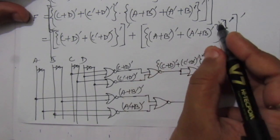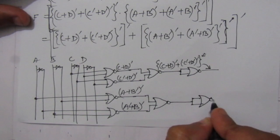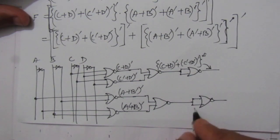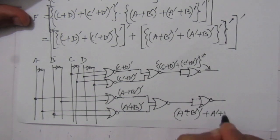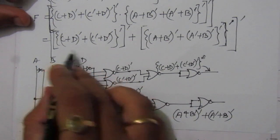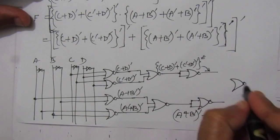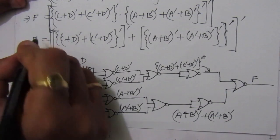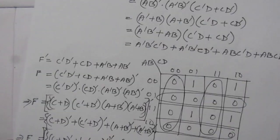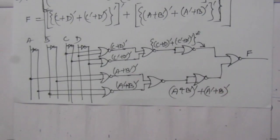After this, we have both sub-expressions. A final two-input NOR gate takes both as inputs and produces the output function F. This completes the logic diagram — the circuit diagram using only two-input NOR gates implementing the given function. Thank you for watching. If you have any questions, please put them in the comment section below. Also like, share, and subscribe to my channel.